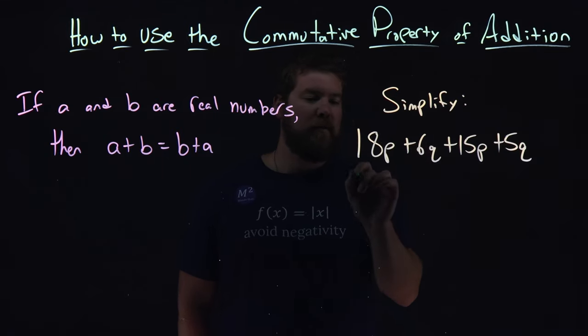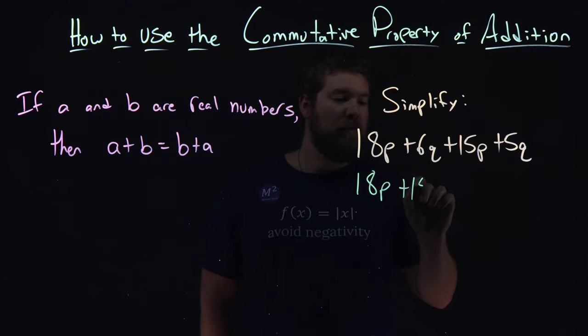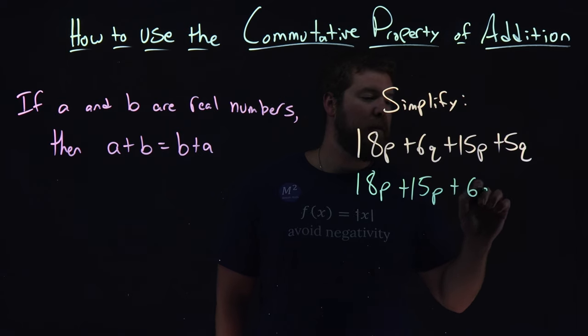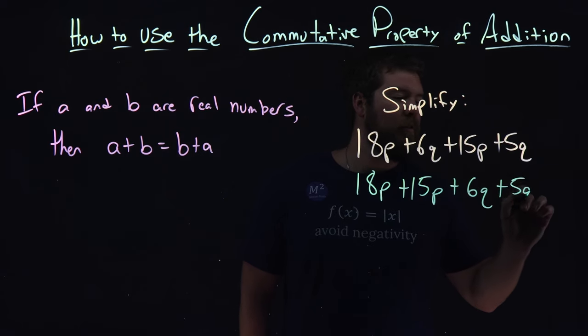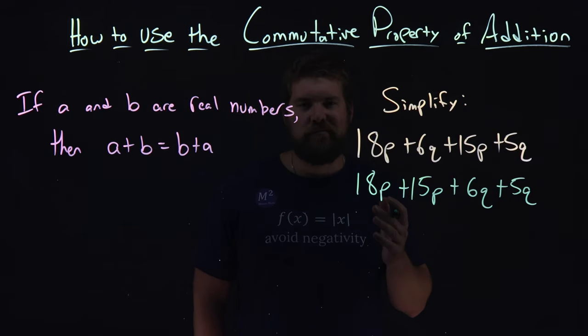We'll put our p's next to each other. We have 18p here, and we're going to swap the 6q and 15p. Plus 15p here, now plus the 6q plus the 5q. We put our like terms next to each other, and now we can just add it.